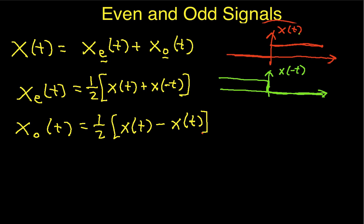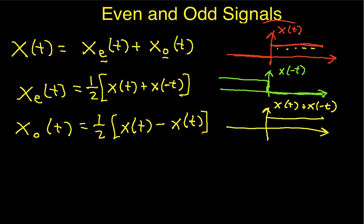Now if I add these two together — x(t) plus x(−t) — for values of t greater than 0, x(t) is 1 and x(−t) is 0, so the sum is 1. For values of t less than 0, x(−t) is 1 and x(t) is 0. Then multiplying everything by one half, I get a constant value of one half everywhere. So the even part of the unit step function is just a constant one half, and this is trivially symmetric about the line t equals zero.